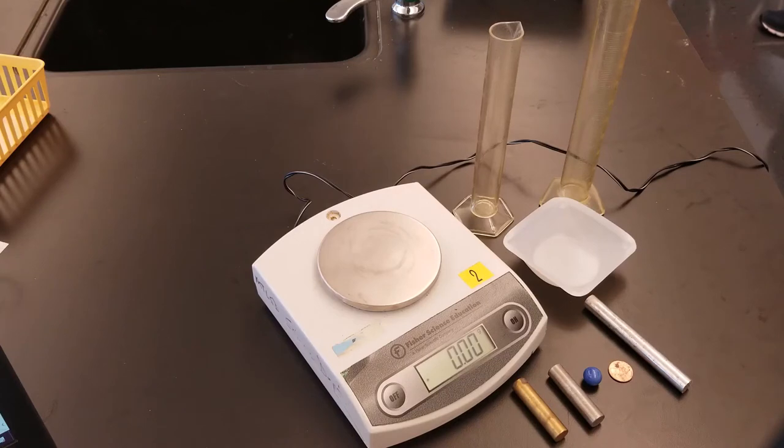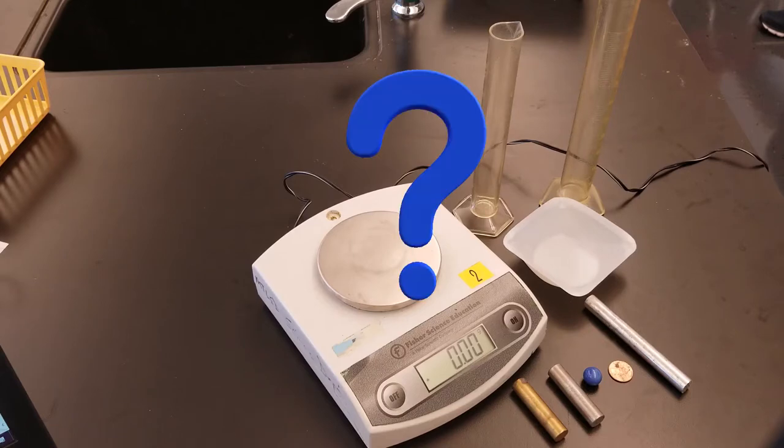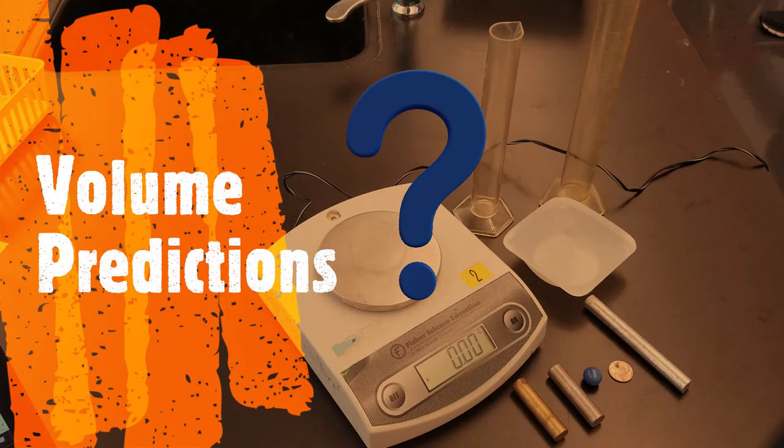Now the second prediction involves volume. Volume is the amount of space an object occupies. Which of these five objects takes up the greatest volume? Which of these objects takes up the least volume?